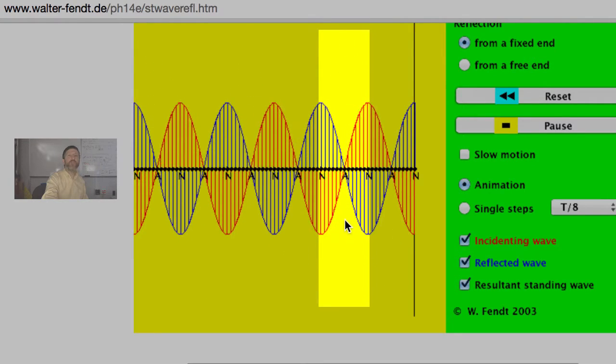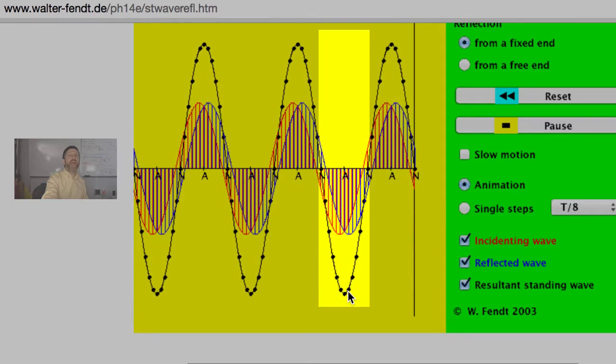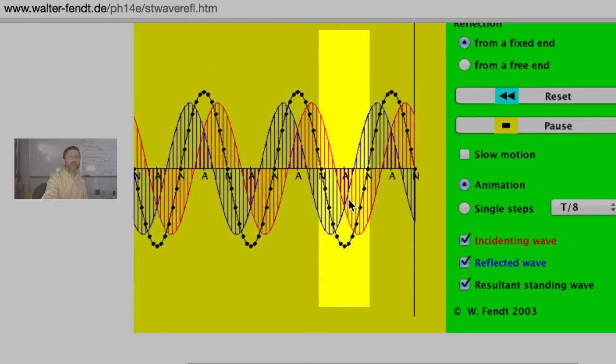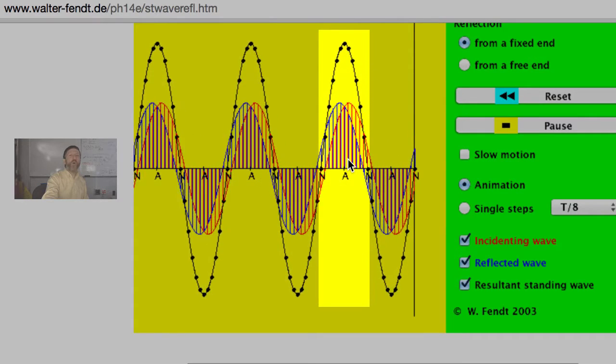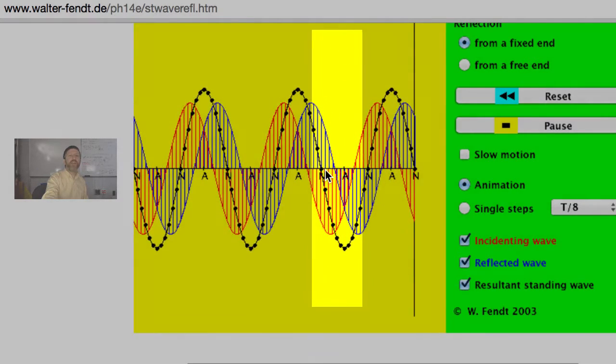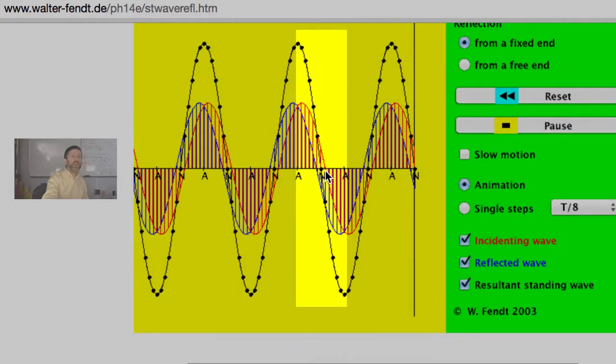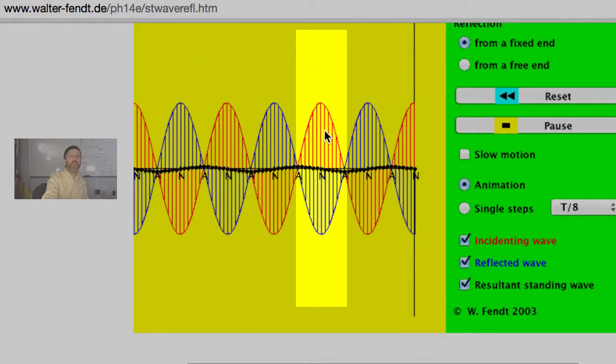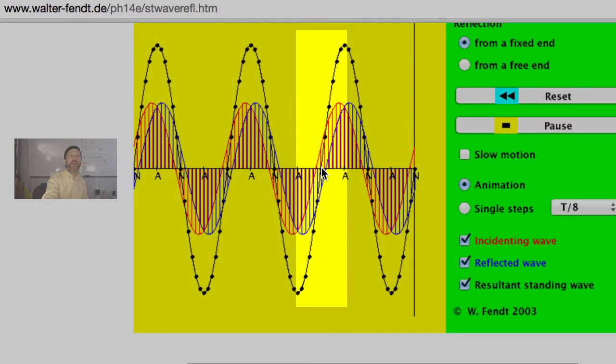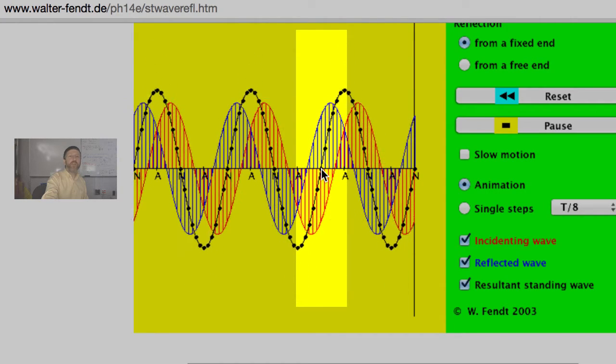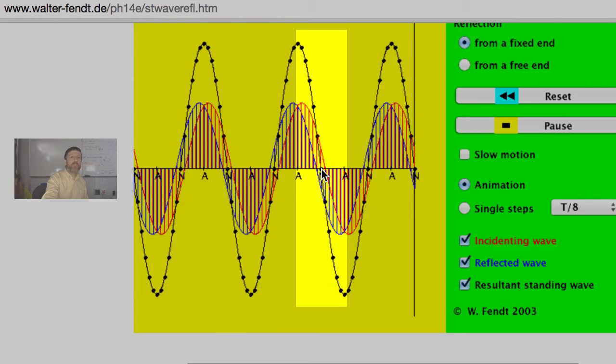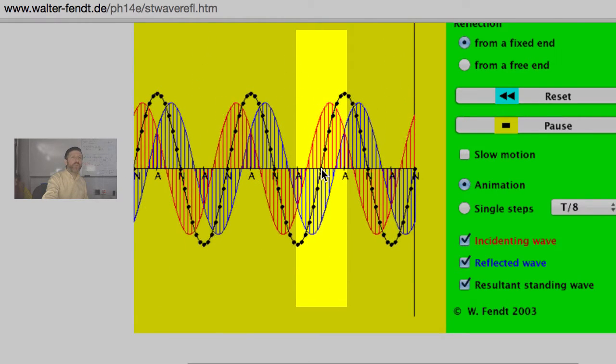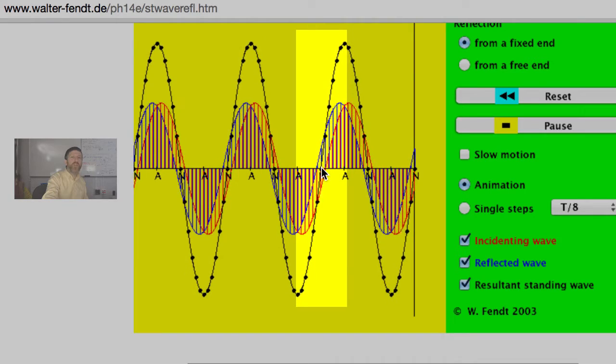Anti-node. Now let's look at this part right here, this part right next to it labeled N. You'll notice where it's labeled N, the red wave and the blue wave are always what to each other? Equal in magnitude, right, but also what? Look at the directions of the blue wave and the red wave.